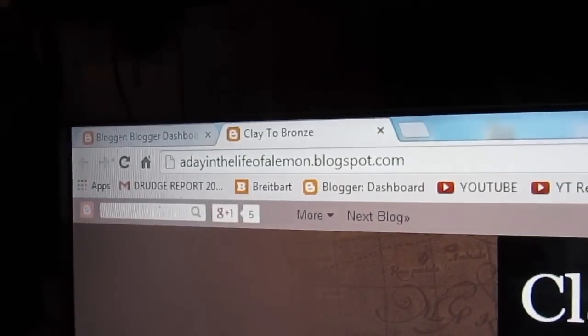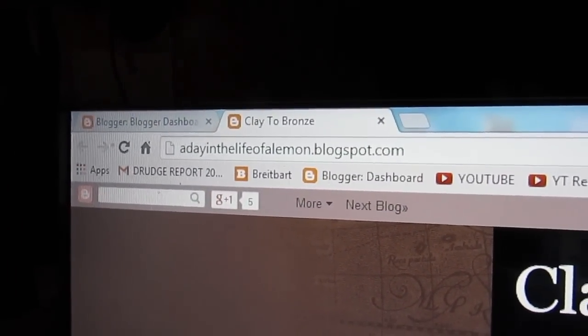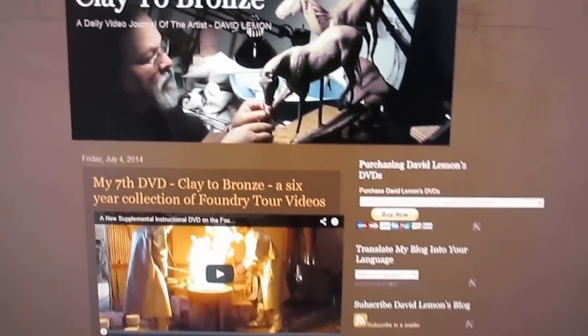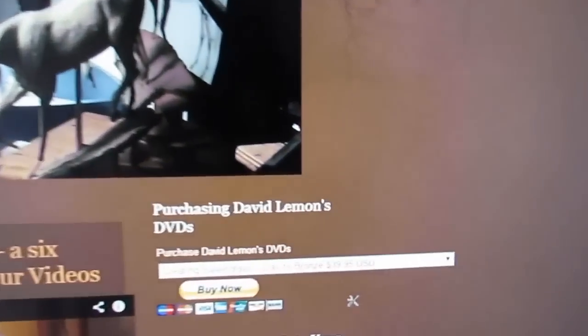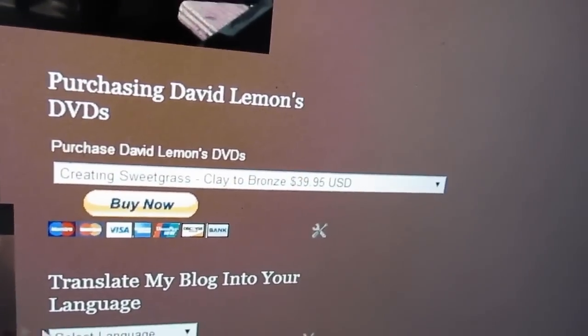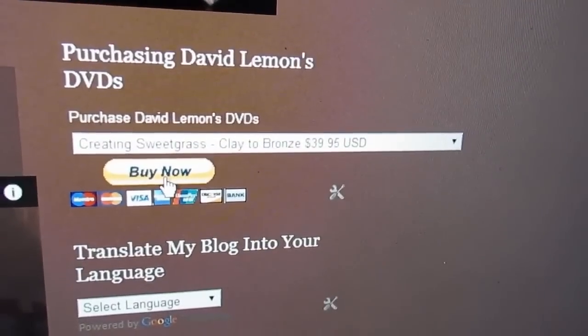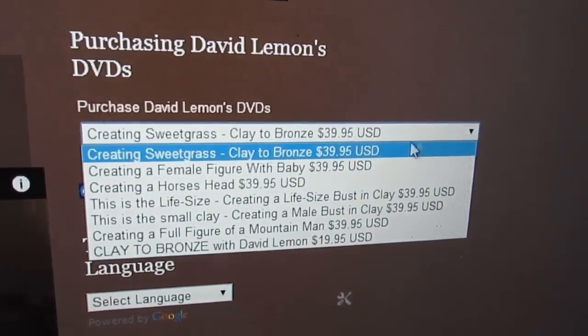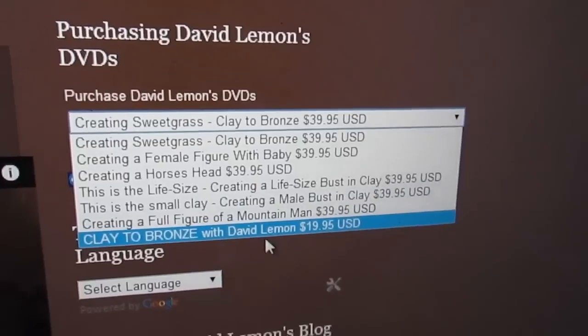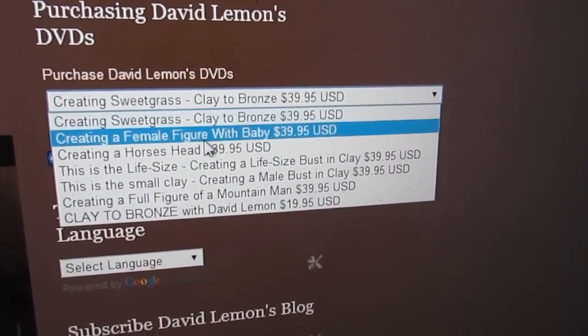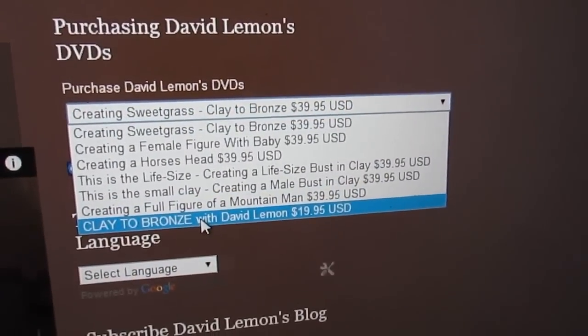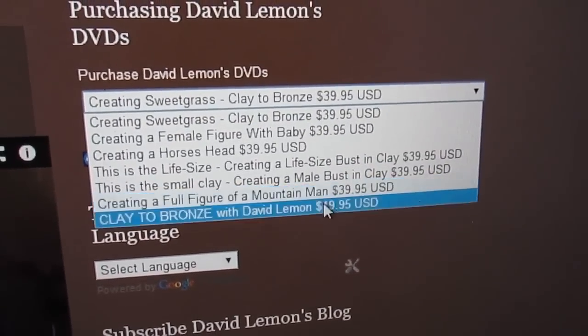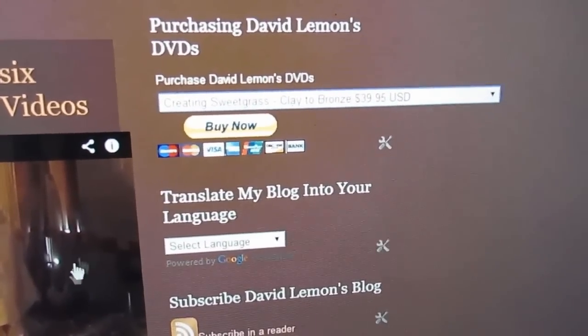Here, I'm going to take a break and show you how to purchase these DVDs online. A Day in the Life of a Lemon Block dot blogspot dot com, that's my website. When you get there, this is the home page. You'll see up here at the top right hand column, there's a Buy Now tab right there. What you do is you just click on this little drop down menu and you got all six of my DVDs here. Right at the bottom is this Clay to Bronze which is the foundry tour, and as you can see it's not as expensive as the ones above. If you don't understand anything on this page, here's a language thing here.